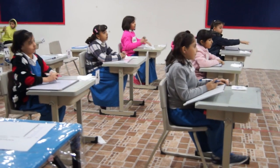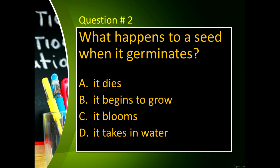Question number 2: What happens to a seed when it germinates? Letter A, it dies. Letter B, it begins to grow. Letter C, it grows larger. And letter D, it plays a record.